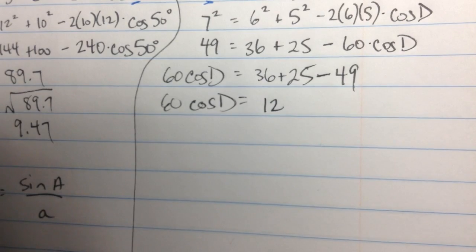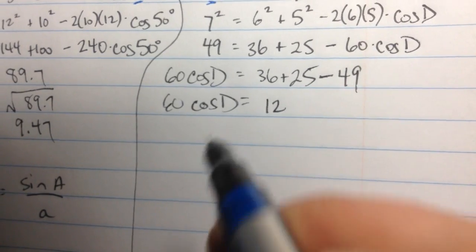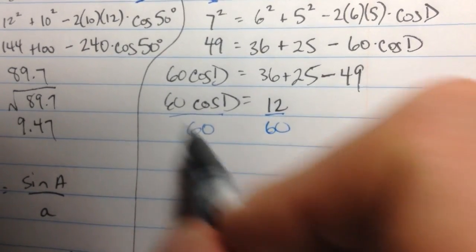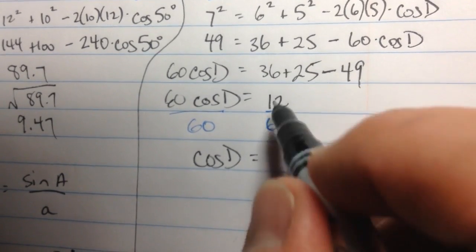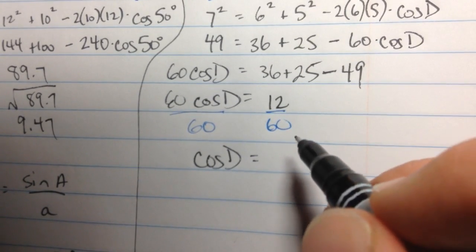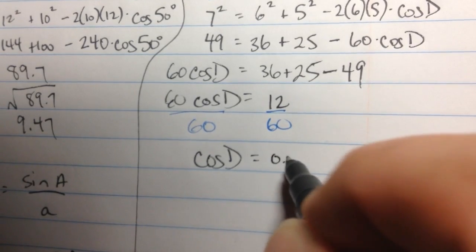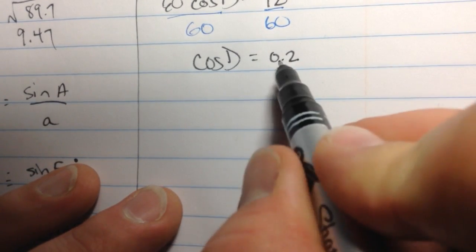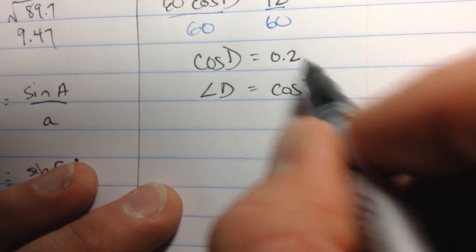Now, check it out. This is 60 times a thing that I want equals 12. Let's divide both sides by 60. That way, 60s will cancel here, and I'll be left with cos D equals 12 over 60. That looks like a pretty nice number. That's 1/5 or 0.2. Sweet! Now I know what the cosine of D is. That means that angle D is the cosine inverse of this value.